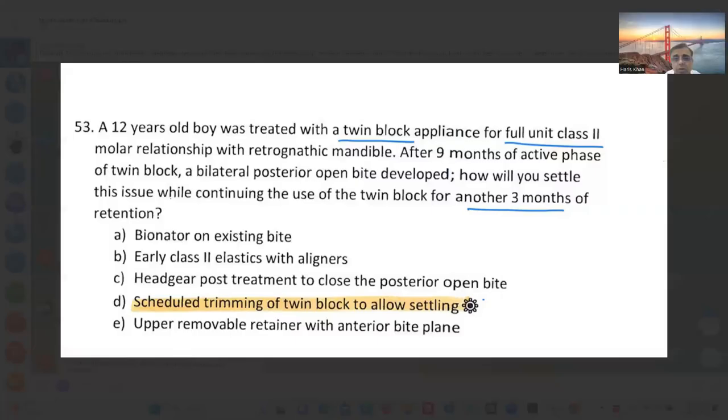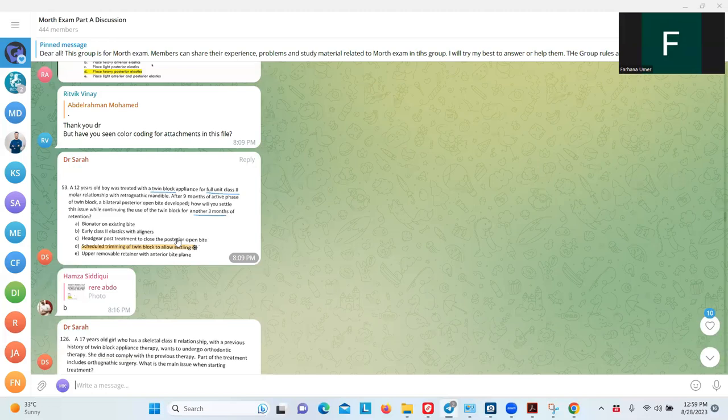A 12-year-old with twin block appliance for full class 2 molar relationship with retrognathic mandible. After nine months of effective phase of twin block, bilateral open bite developed. How will you settle this issue while continuing the use of twin block for another three months? Then nighttime wear of the twin block. Bionator—no. Class 2 elastics—no. Headgear—no. Upper removable retainer with anterior bite plane. I think D, because E is not clearly mentioned what type of bite plane. Yes, sir.